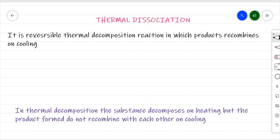Let us discuss another chemical reaction called thermal dissociation reaction. It is basically a reversible thermal decomposition reaction in which reactants decompose on heating to give products, but the products also show a tendency to recombine with each other in order to give the reactant back on cooling. This is the thermal dissociation reaction.